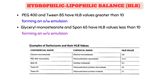On your screen you can see a slide with a table containing examples of surfactants with their HLB values, along with their commercial and chemical names. Analyzing this table, PEG-400 and TWEEN-85 have HLB values greater than 10, so they will form an oil-in-water emulsion. Glycerol monostearate and SPAN-65 have HLB values less than 10, so they will form a water-in-oil emulsion.